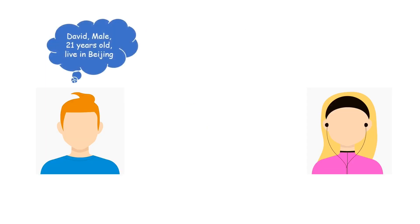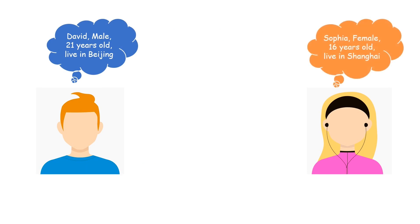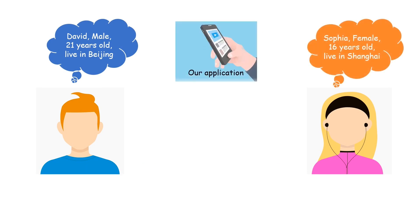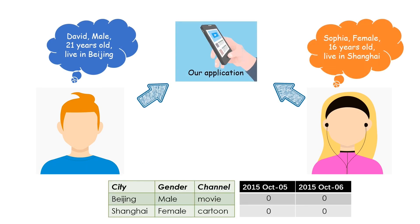David, a 21-year-old boy who lives in Beijing, and Sophia, a teenage girl living in Shanghai. Both of them favor our app. We use a table to record user visits, where columns represent type of users and rows represent data.